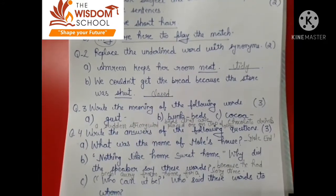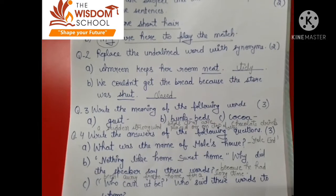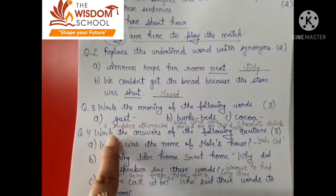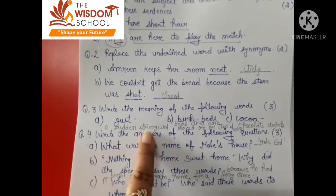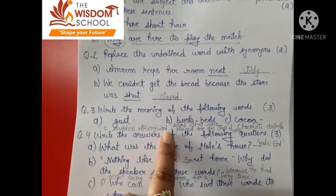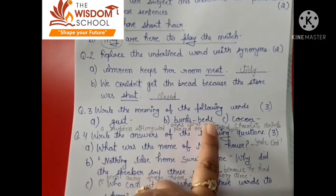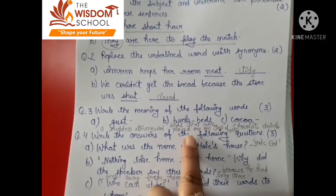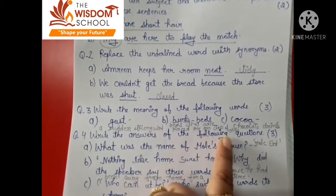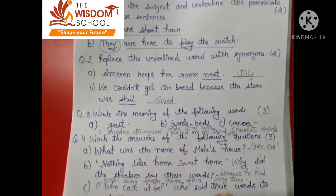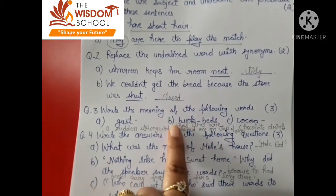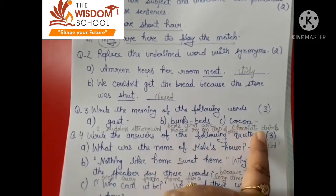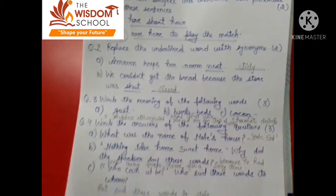Question number three: Write the meaning of the following words. 'Gust' means a sudden strong wind. 'Bunk beds' means beds that are placed one on top of the other — ek bed ke upar dusra bed rakha jata hai, that is called bunk beds. 'Cocoa' means a chocolate drink.